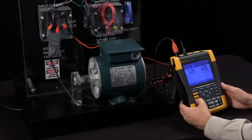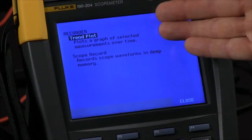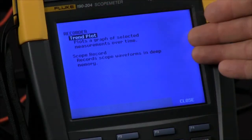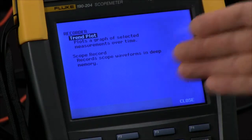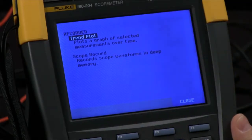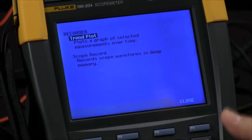Another option: when you go to your recorder selection we can either do a trend plot which is going to give us an RMS graph of my signals coming in. We can also go into scope record which is going to save the actual waveform in deep memory.